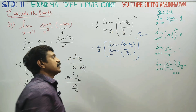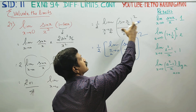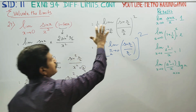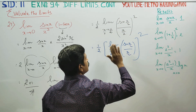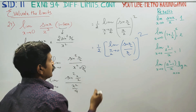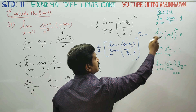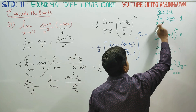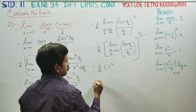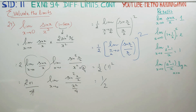Limit x by 2 turns to 0 of sin x by 2 divided by x by 2, whole squared. Applying the limit, this is 1 by 2 multiplied by the standard result. Since sin(x/2) divided by (x/2) follows the format where x by 2 equals 0, the answer will be 1 by 2 as your final answer. Thank you.